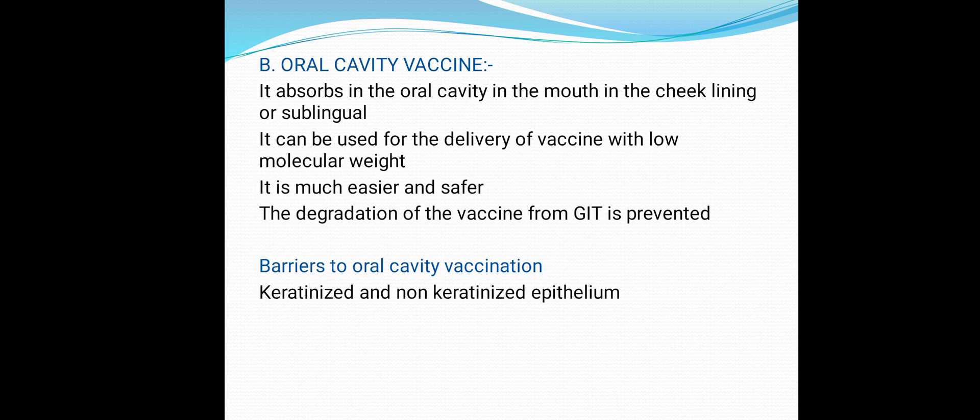The second type is oral cavity vaccination, where absorption occurs through the oral cavity — in the mouth. It is generally used for delivery of vaccines with low molecular weight. It is much easier and safer, and degradation by the GIT is prevented. The barriers to the oral cavity include keratinized and non-keratinized epithelium.